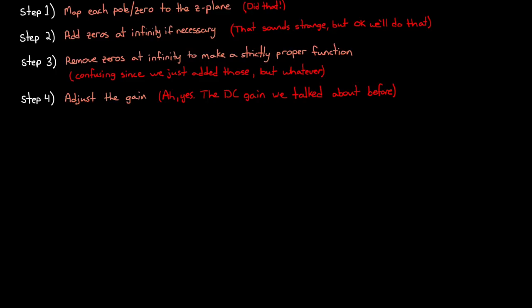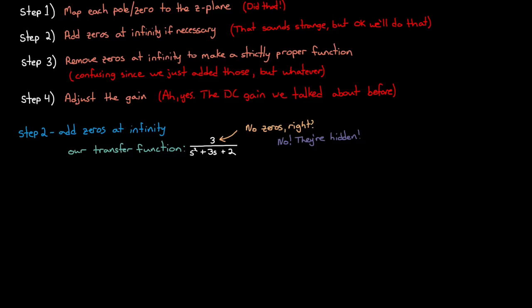Step two, add zeros at infinity. Now at first glance, it would look like this system has no zeros, right? There's nothing in the numerator that looks like it would be a zero. However, there are zeros there. They're just hidden. Remember that if there are more poles than zeros, like we have, then your transfer function actually has a zero at infinity, with the number of zeros at infinity being the difference of the number of finite poles and finite zeros. Now I think this is easier to comprehend in a root locus plot.